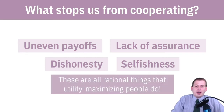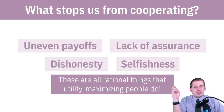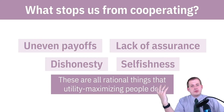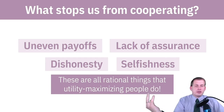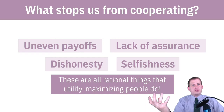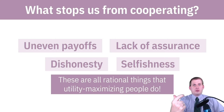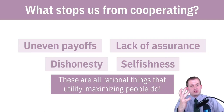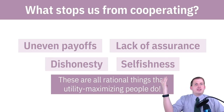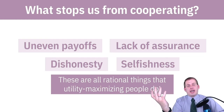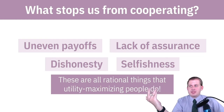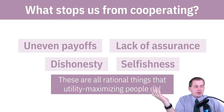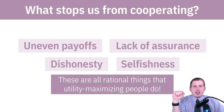Selfishness is another barrier — if you know someone is a selfish person who really wants the payoffs, you're not going to want to cooperate with them. All of these things — dishonesty, selfishness — are things that rational utility-maximizing people want to do. Economists say if you have to lie or be selfish to maximize your utility, so be it. Ethicists and people with morals would disagree, but in game theory, people choose the best option for themselves, which creates social dilemmas.